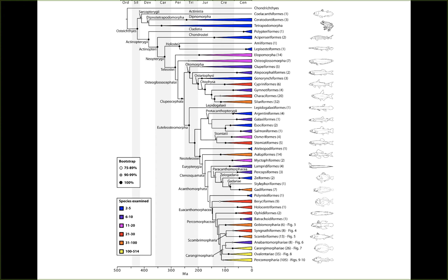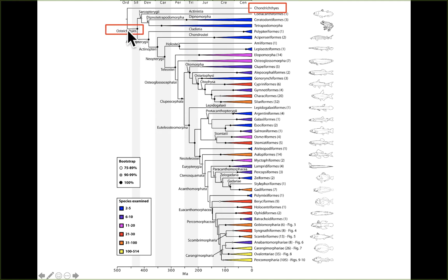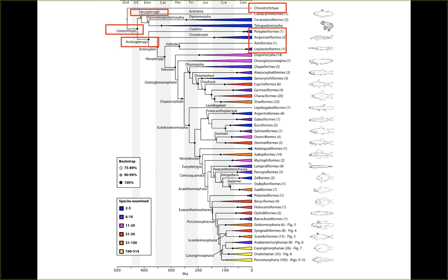What we've seen so far in ichthyology, and what we're going to be going over, is represented on this phylogenetic tree. We've gone over the Chondrichthyes, which are sharks, skates, and rays. Now we're moving on to Osteichthyes, the category for bony fishes and bony vertebrates. The sarcopterygians, or lobe-finned fishes, like coelacanths. Now we're moving on to the actinopterygians, which included the sturgeons, paddlefishes, and gars — the ancestral fishes from our last video lecture.